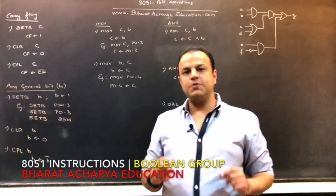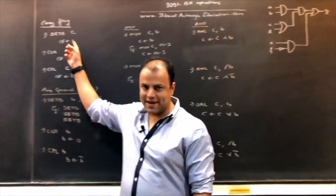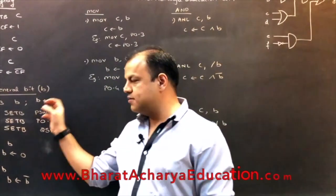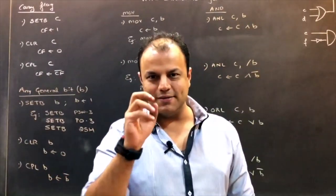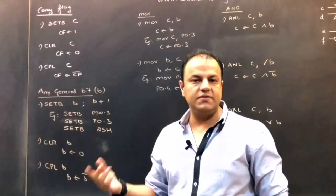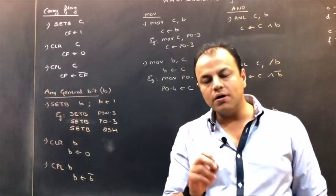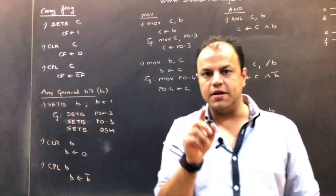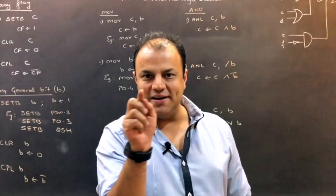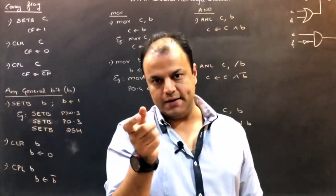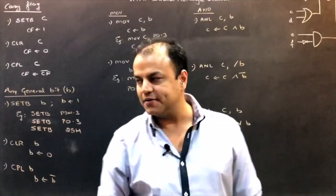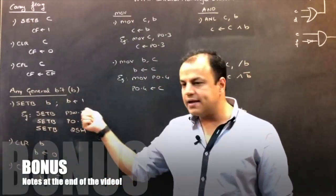There's a small group of instructions which work on bits. The bit can either be the carry flag, so you have individual instructions for the carry flag, or it can be a general bit. A general bit can be of two types: a bit of any bit-addressable SFR — like PSW.3, P0.4, TCON.7 — or it can be a bit from the bit-addressable region in internal RAM. From location 20H to 2FH, there are 16 locations which have bit-addressable property. 16 multiplied by 8 gives 128 bits having addresses 00 to 7F. Those are bit addresses.